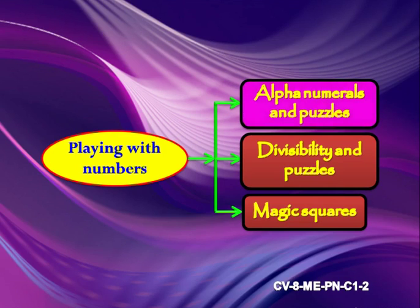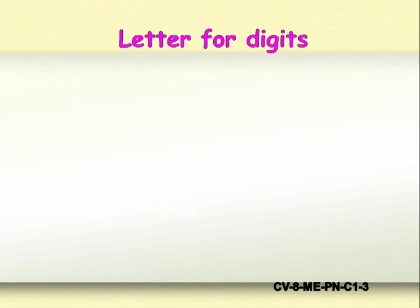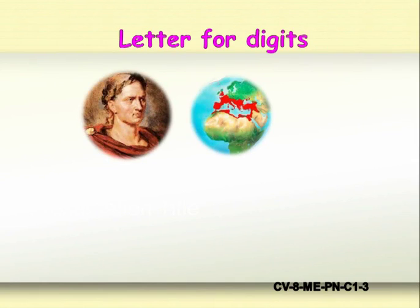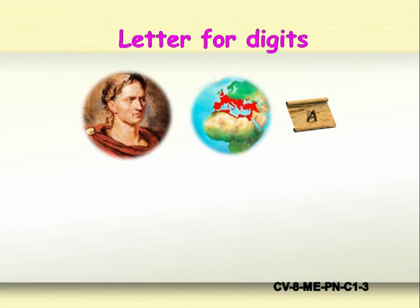In this capsule, we study about alpha numerals and puzzles. Nearly two thousand years ago, Julius Caesar was busy taking over the world, invading countries to increase the size of the Roman Empire. He needed a way of communicating his battle plans and tactics without the enemy finding out. So Caesar would write messages to his generals in code — instead of writing the letter A, he would write the letter three places further on in the alphabet, the letter D. At the end of the alphabet, he would go back to the beginning, so instead of X he would write A.